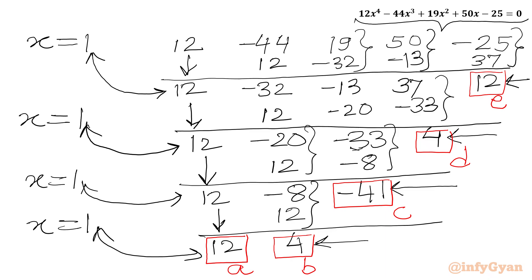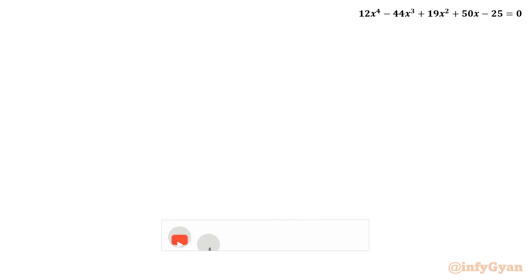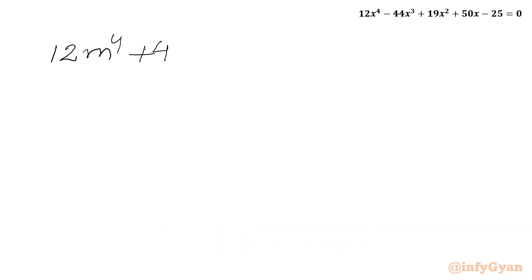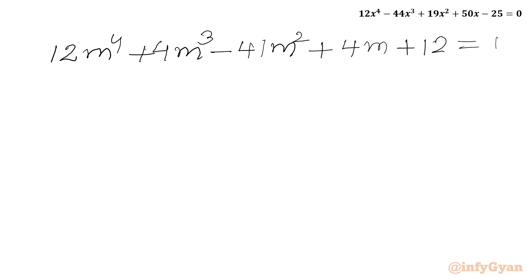This method is called Horner's method. Let me write our quartic: A was 12, so 12m⁴; B was 4, so plus 4m³; C was minus 41, so minus 41m²; D was 4, so plus 4m; and E was 12, so plus 12, equal to 0.